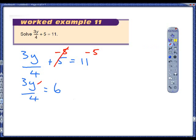The next thing I have to cancel down is the divided by 4. So I'll multiply by 4 on both sides and you get 3y is equal to 24.